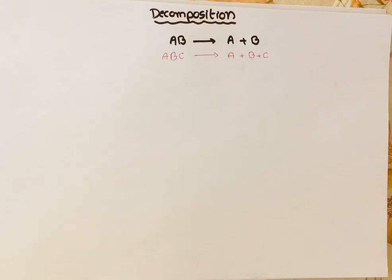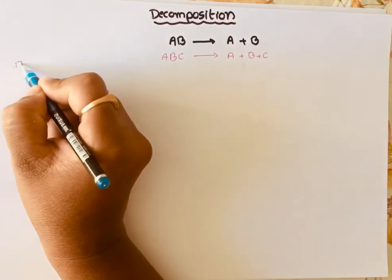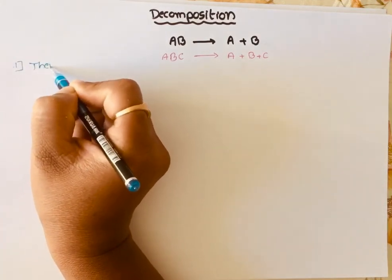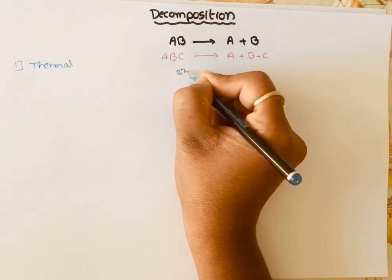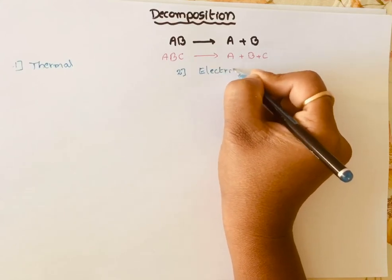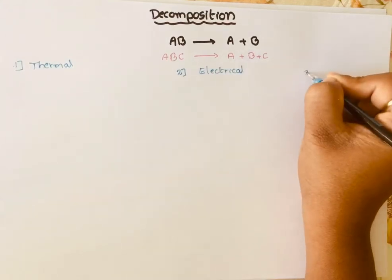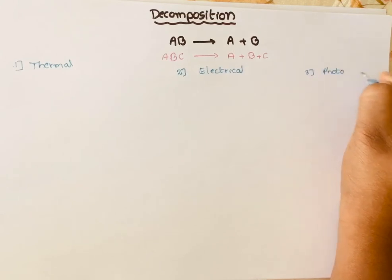Let's see how many types of decomposition reactions we have and what examples exist for each type. Broadly, we can classify decomposition reactions into three types: thermal decomposition reactions, electrical decomposition reactions, and photo decomposition reactions.